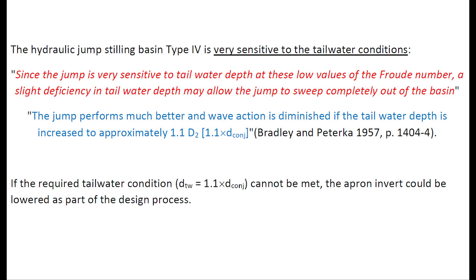The hydraulic jump stilling basin Type 4 is very sensitive to tailwater conditions, as emphasized by its developers. Since the jump is very sensitive to tailwater depth at this low Froude number range, a slight deficiency in tailwater depth may allow the jump to be swept completely out of the basin. The jump performs much better and wave action is diminished if the tailwater depth is up to 1.5 times the conjugate depth. If the required tailwater condition cannot be fulfilled, the apron invert could be lowered as part of the design process.